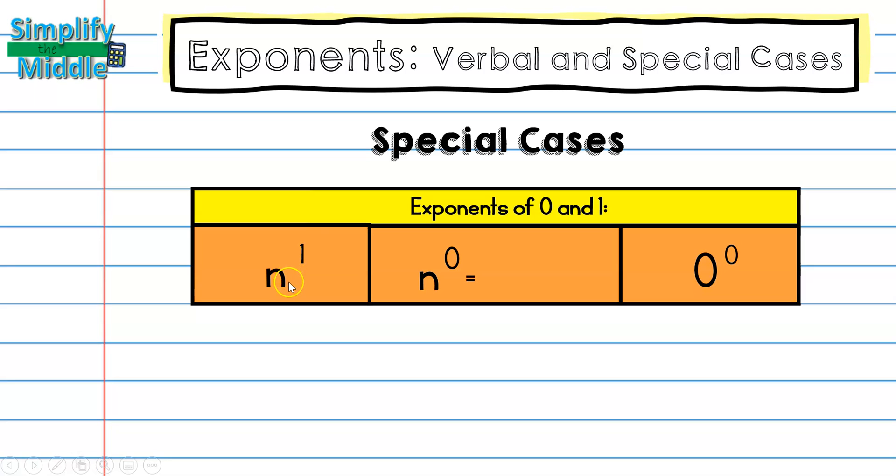So on this one, I have n to the first power. I know that the exponent is going to tell me that I write the base a specific number of times, and I'm going to be multiplying each of those bases. There's nothing to multiply here, because I'm simply just going to write the base. So anytime that I see n to the first power, I'll just write the base.